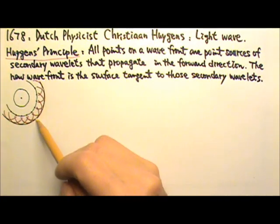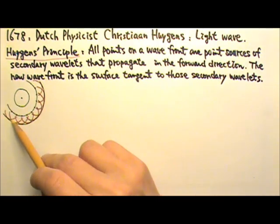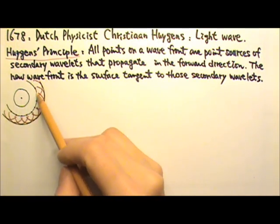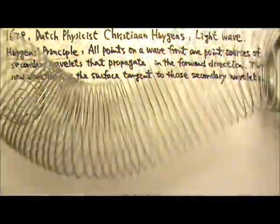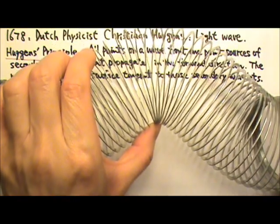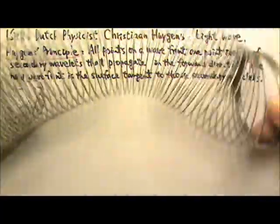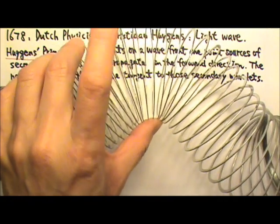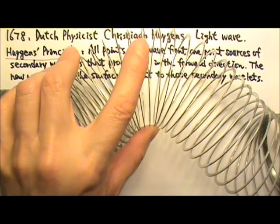The original wavefront is the surface tangent to those secondary wavelets. A wavefront includes all the points on a wave crest. Since a wave crest means the medium is not at the equilibrium position, when a disturbance is created, that motion is just like bringing the medium to the crest. So it makes sense to say that a wave crest is like a new source of disturbance — a new wave source.